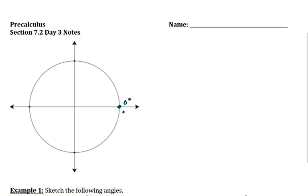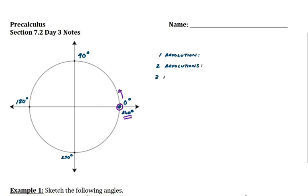A couple things about thinking of a circle: if we think of 0 degrees as right here where the x-axis meets the circle, then up where the y-axis meets the circle would be 90 degrees. Rotating counterclockwise, 180 degrees would be halfway around the circle, 270 degrees would be three-quarters of the way around, and 360 would put me back where I started — one full revolution around the circle is 360 degrees.